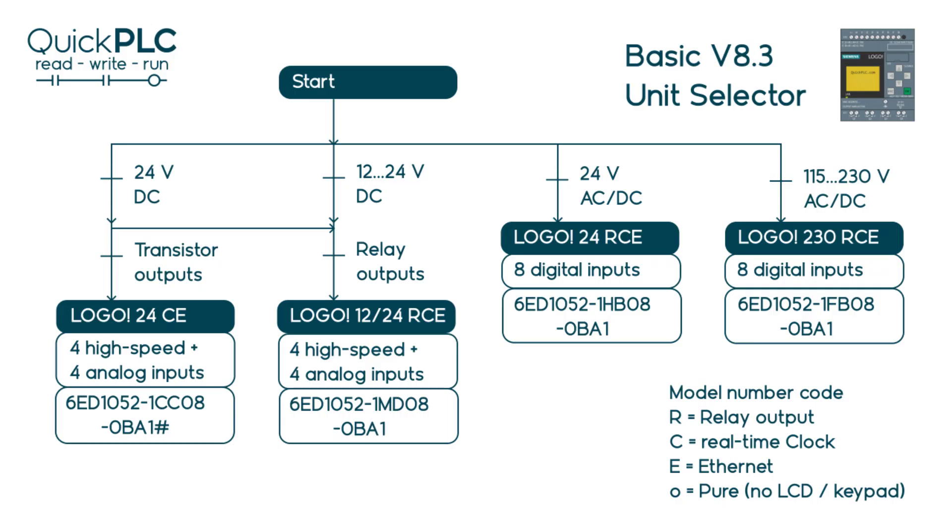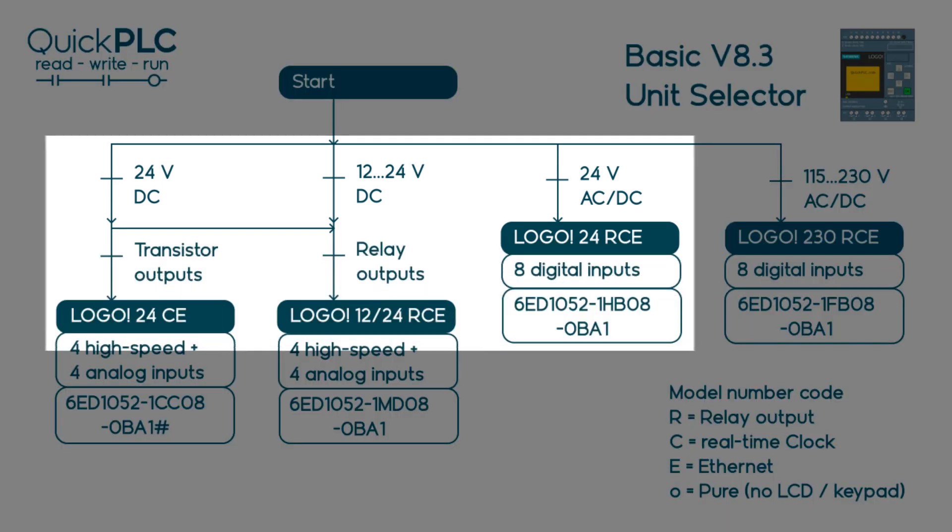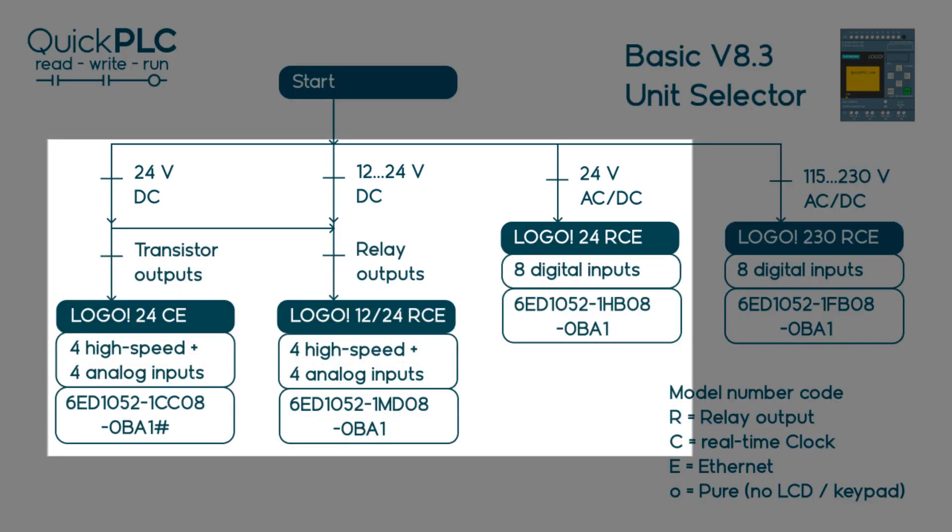This chart shows the LOGO basic selection process. For 24 volt DC inputs you have the choice of transistor or relay outputs. The transistor outputs don't suffer wear and tear of relay contacts but can only supply about 0.3 amps.